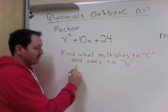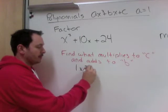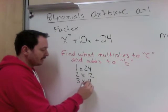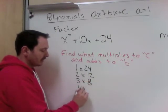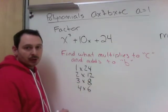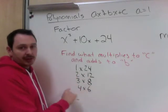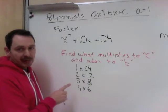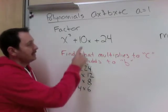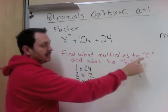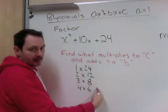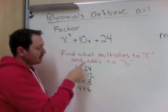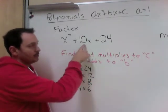The number 24 is 1 times 24, 2 times 12, 3 times 8, 4 times 6. So all of these multiply to 24, but which of these would add to b? Which of these would add to 10?